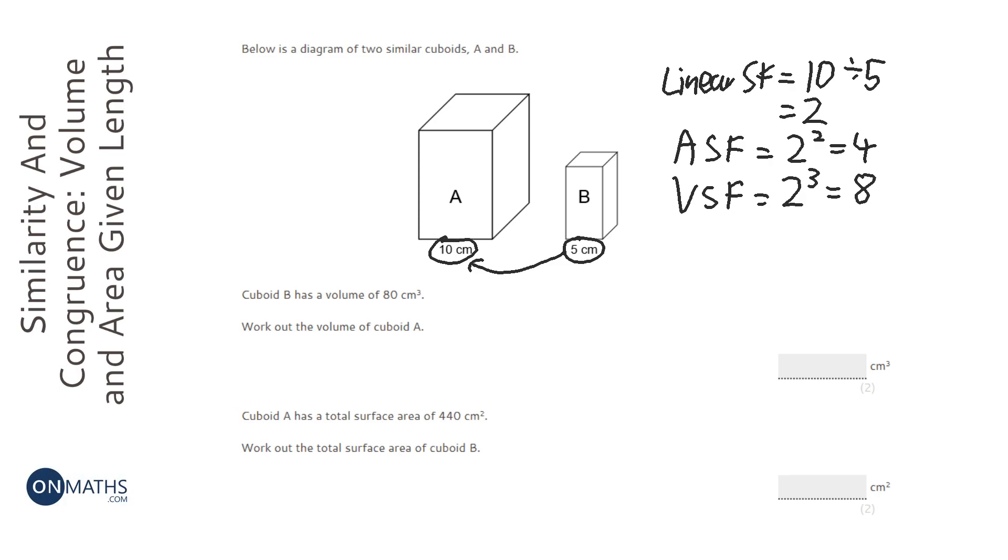So with this first question, it says cuboid B has the volume of 80. So if B has 80, the volume of A is going to be 80 times the volume scale factor, which is 8. So that's going to be 64 with a 0, so 640. And it's that simple.